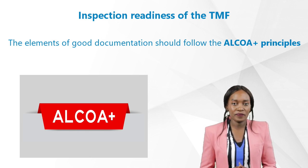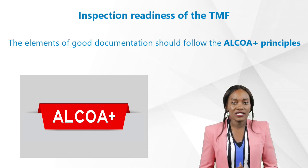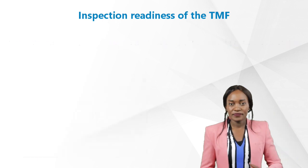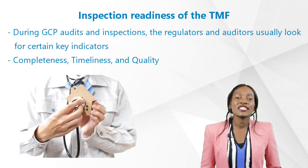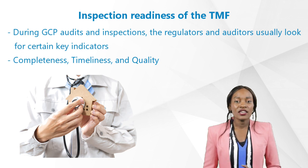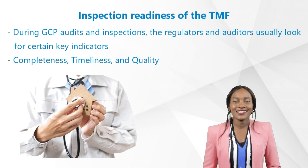Changes should show why they were made, whether they were intentional, and whether they can be retraced back to queries. Typically, the elements of good documentation should follow the ALCOA+ principle: Attributable, Legible, Contemporaneous, Original, and Accurate — you can also find it on our video here. During GCP audits and inspections, regulators and auditors usually look for certain key indicators.